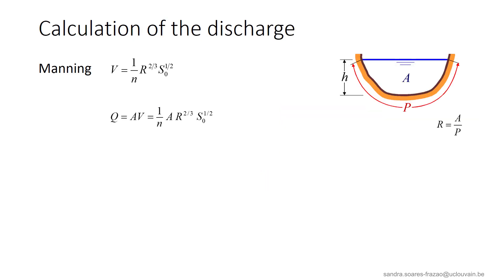Let's start with the discharge. By definition, it is the product of the flow area and the flow velocity. Using the Manning equation, the discharge is expressed accordingly. If the channel cross section A, the water depth, the bed slope, and the friction coefficient are known, the discharge can be easily calculated.